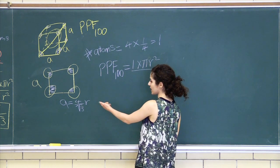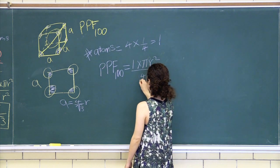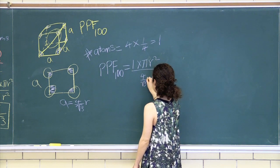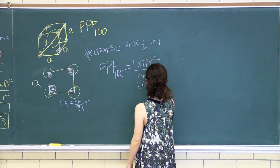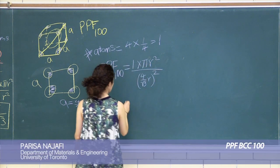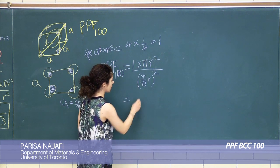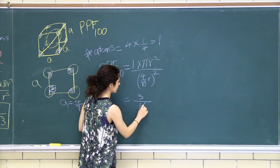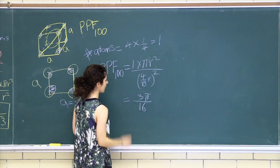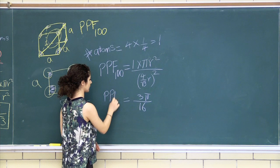...of the plane, which is a squared, which is four over root three R whole squared. Then we just crunch these numbers and you'll get three over 16 times pi for your planar packing factor.